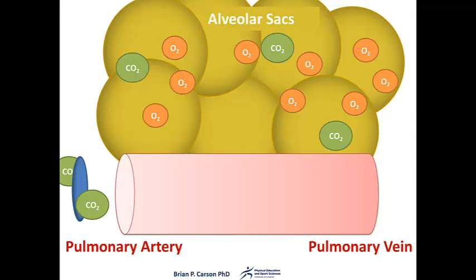In the alveoli, the partial pressure of oxygen is high and carbon dioxide is low. As this blood reaches the pulmonary capillaries and comes in proximity of the alveoli, this partial pressure differential causes oxygen and carbon dioxide to move down their respective pressure gradients and diffuse across the respiratory membrane.